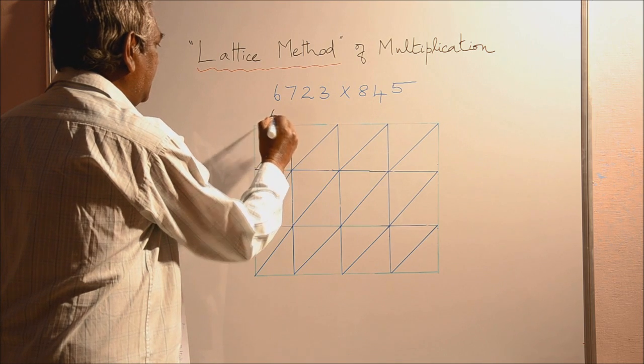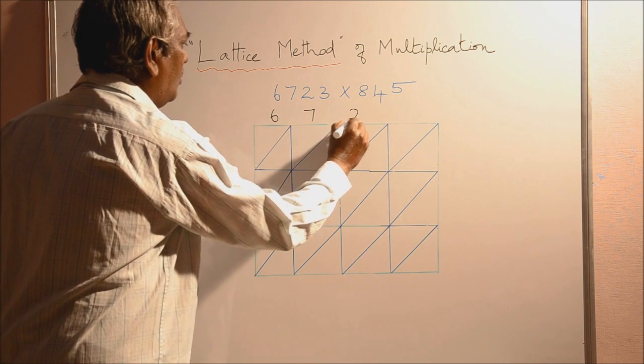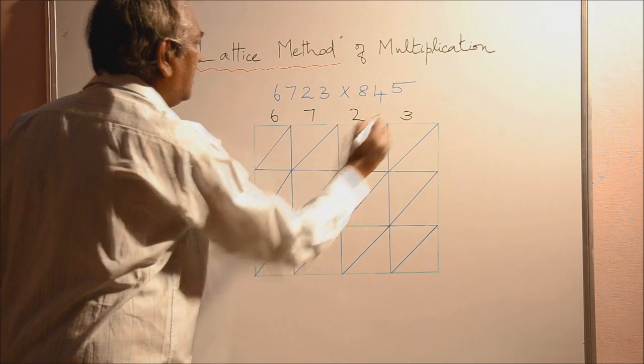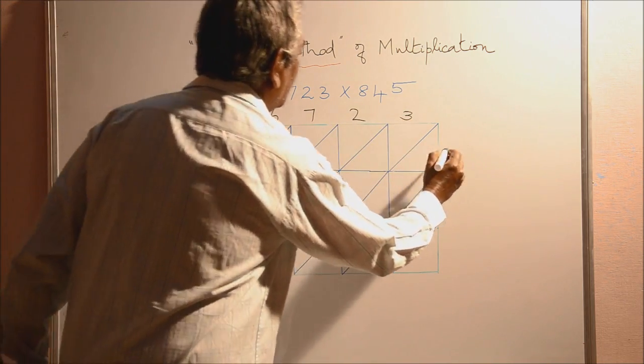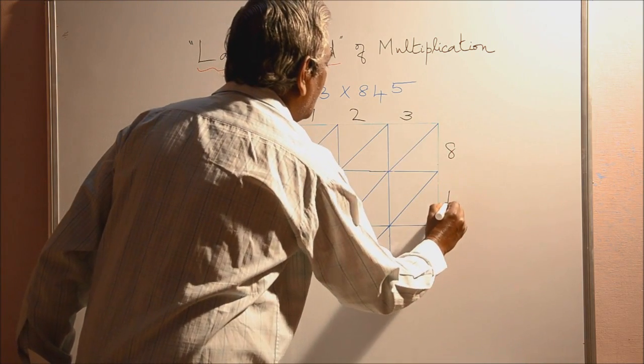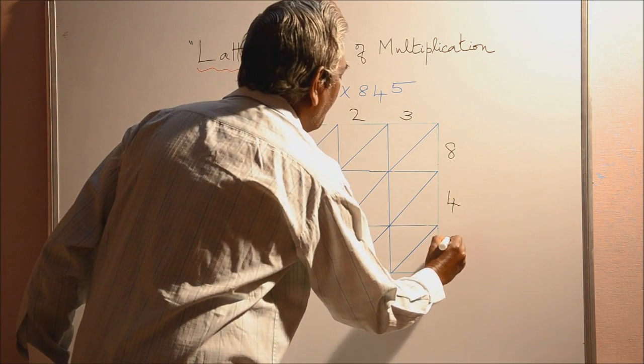this is 6, 7, 2, 3. Then here we will write this 8, 4, 5.